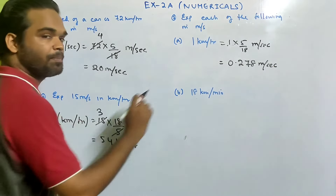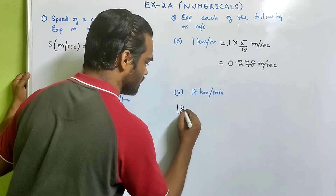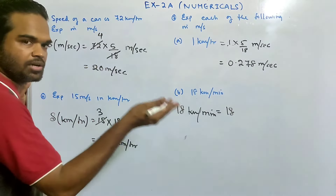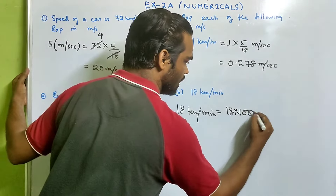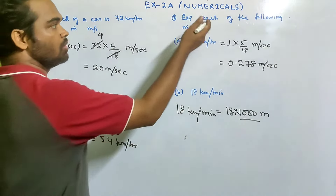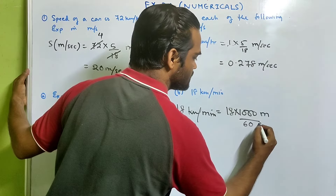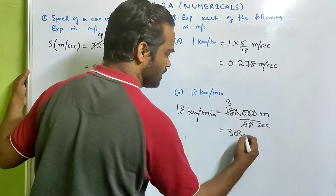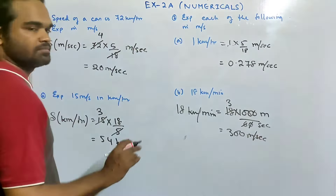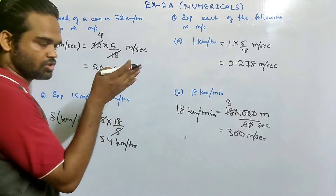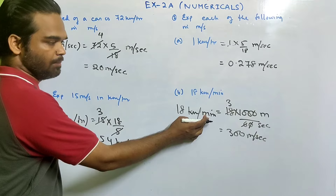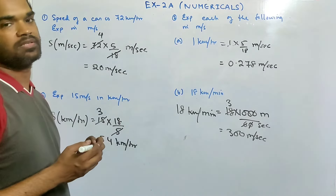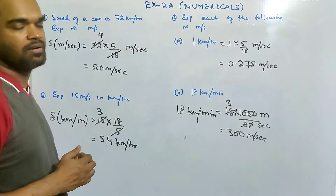Next: 18 kilometer per minute to meter per second. To convert, multiply by 1000 (km to m) and divide by 60 (minutes to seconds): 18 × 1000 / 60 = 300 meter per second.